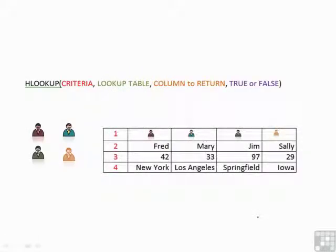The HLOOKUP formula, where the H stands for horizontal, is exactly the same syntax as the VLOOKUP formula, the only difference being the makeup of the actual lookup table.